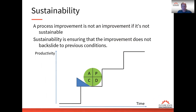In the last session we talked about the Plan Do Check Act cycle and the fourth element, the act step, putting the necessary controls in place to prevent backsliding. We want to put this wedge in place once we get an improvement to make sure we don't backslide. Sustainability is ensuring that we don't go back to previous conditions — a process isn't an improvement if we can't sustain it.